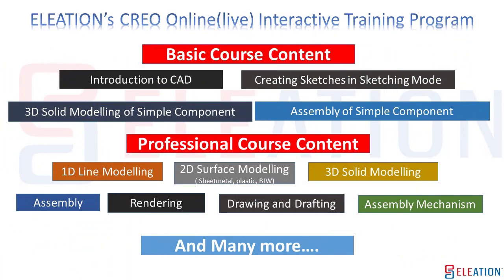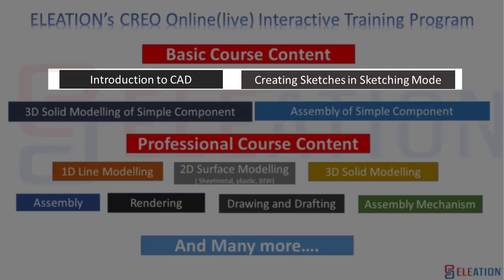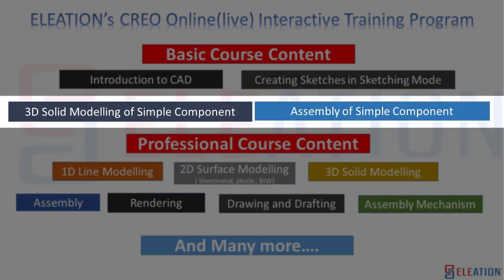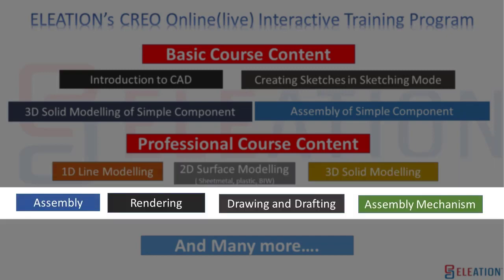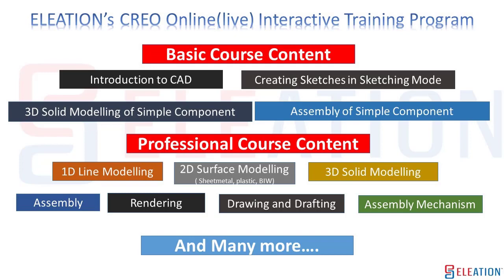Eleation's Creo training program course content includes: introduction to CAD, creating sketches in sketching mode, 3D solid modeling of simple components, assembly of simple components, 1D line modeling, 2D surface modeling, sheet metal, plastic, BIW, 3D solid modeling, assembly, rendering, drawing and drafting, assembly mechanism, and many more.